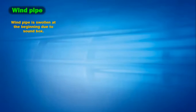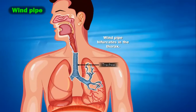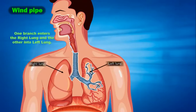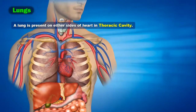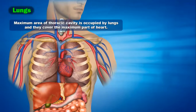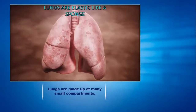The wind pipe is swollen at the beginning due to the sound box — the slightly swollen part visible on screen is where sound vibration happens. The trachea or wind pipe bifurcates in the thorax into left and right, going to each lung. The lungs are present on either side of the heart in the thoracic cavity. Maximum area of the thoracic cavity is occupied by the lungs, and they cover most of the heart, which is why the heart is not directly damaged in a collision. Each lung has a double-layered covering called the pleura.